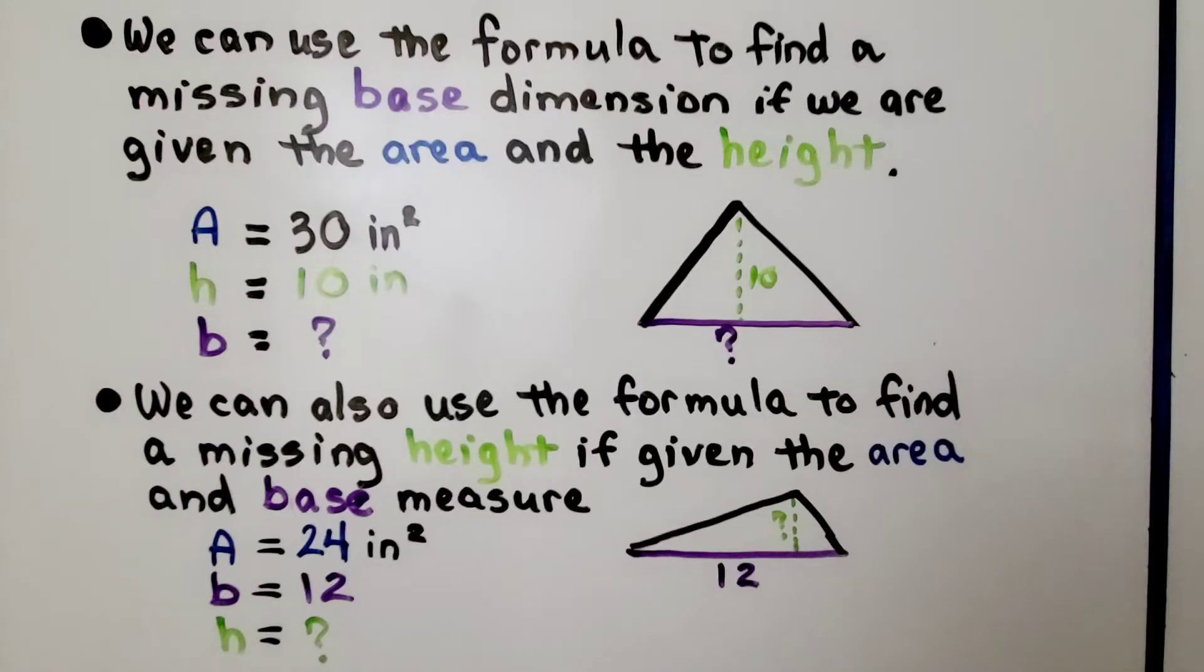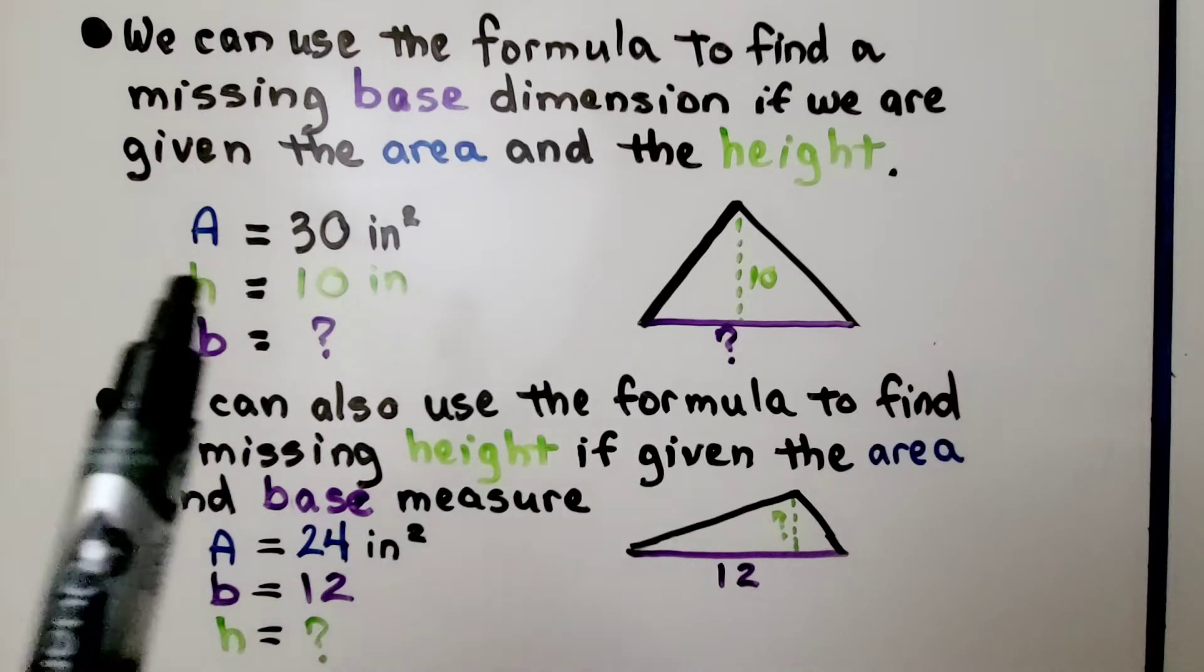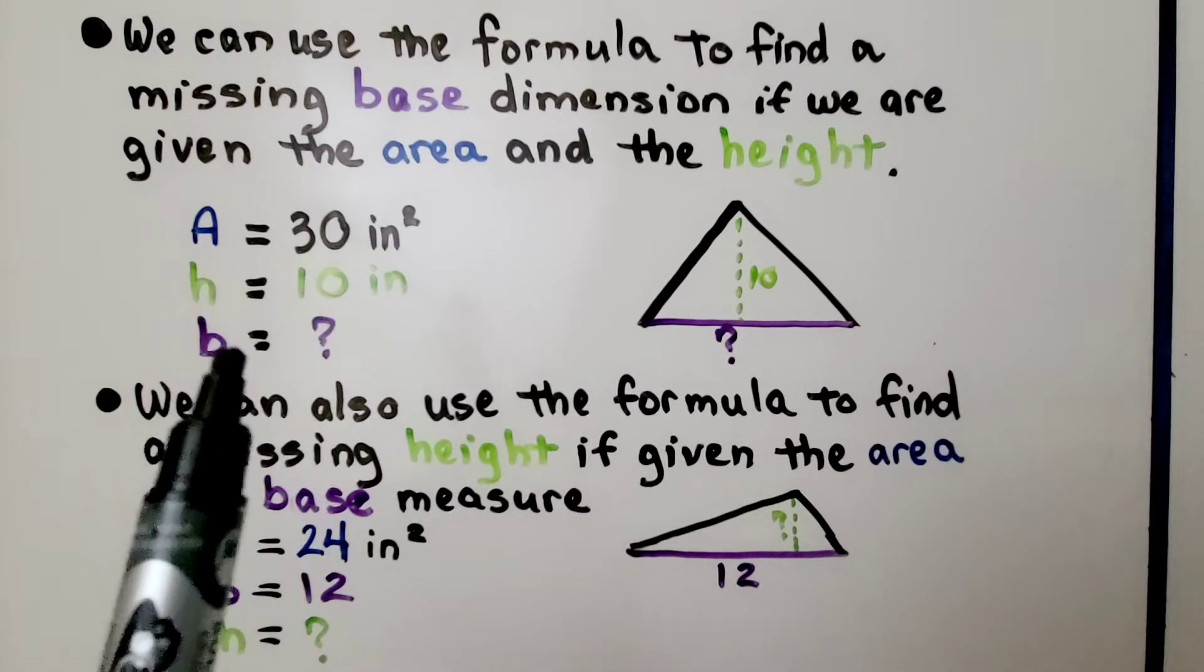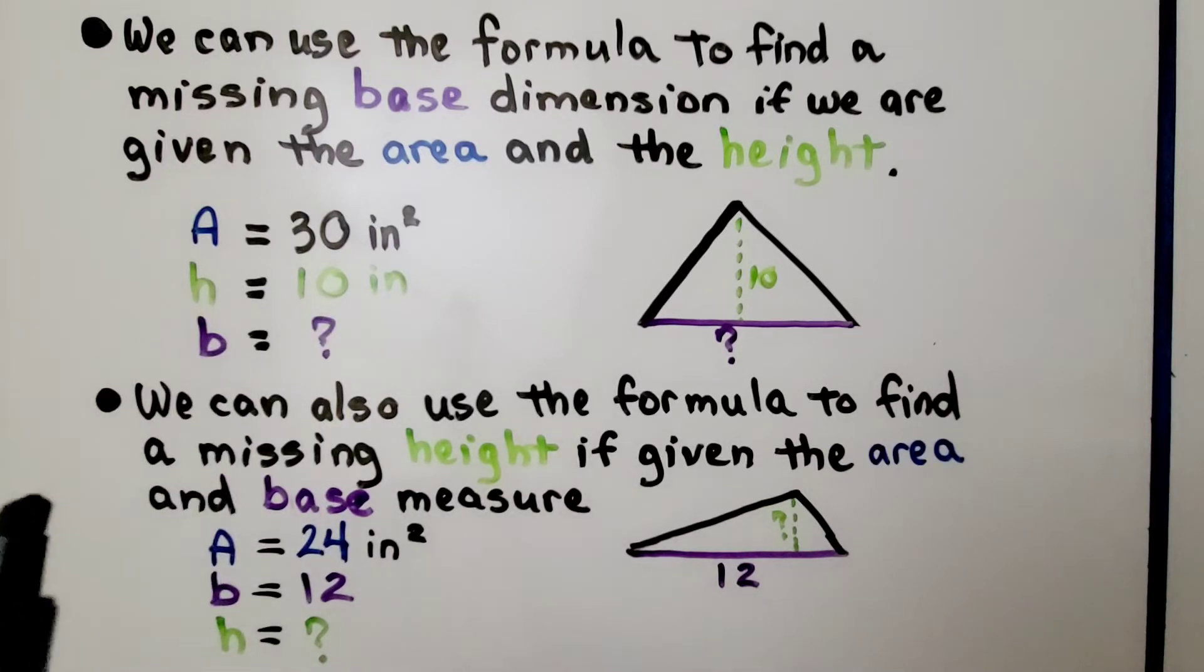This means that we can use the formula to find a missing base dimension if we are given the area and the height. If we know the area and the height, we will be able to find the base. We can also use the formula to find a missing height if given the area and the base.